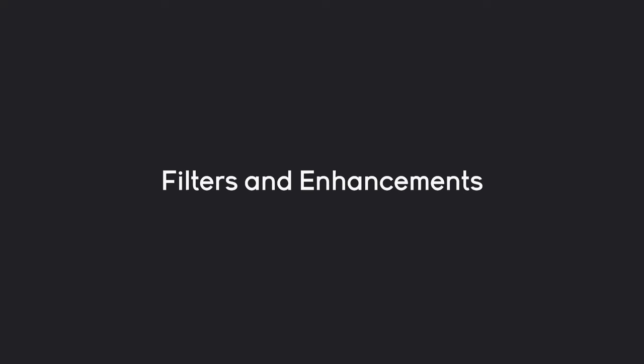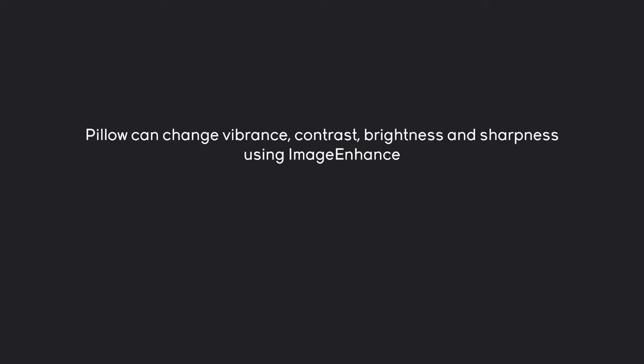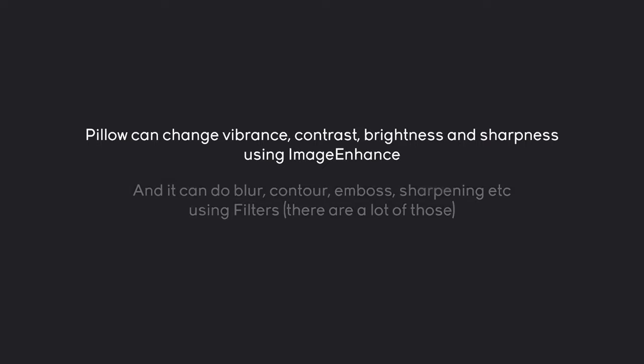Now we can cover filters and enhancements. Pillow can change vibrance, contrast, brightness, and sharpness using ImageEnhance. We can also use filters for blurring, contouring, embossing, sharpening, and about 10 other things. They are really easy to access. Let's have a look at this in code.